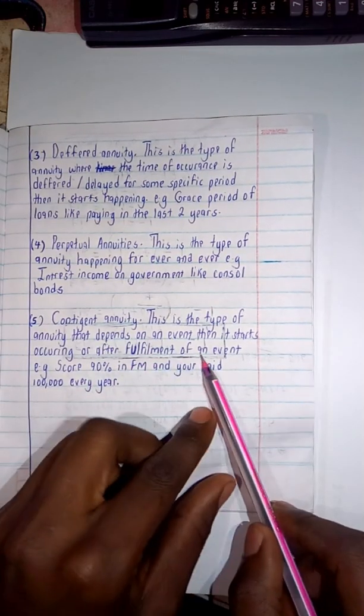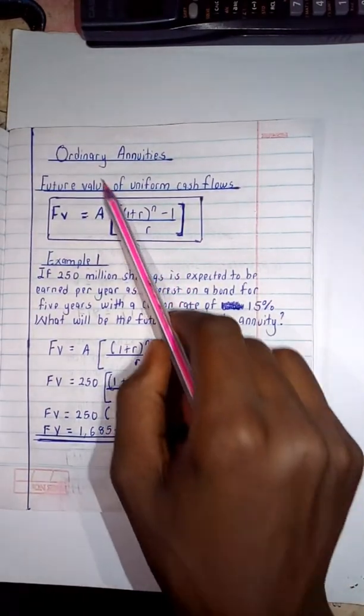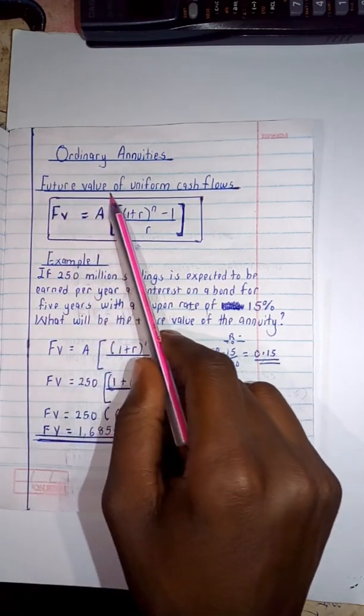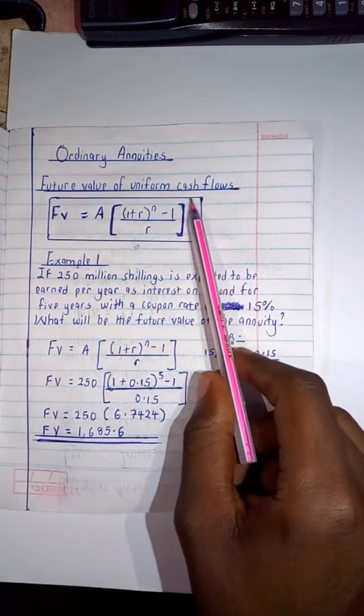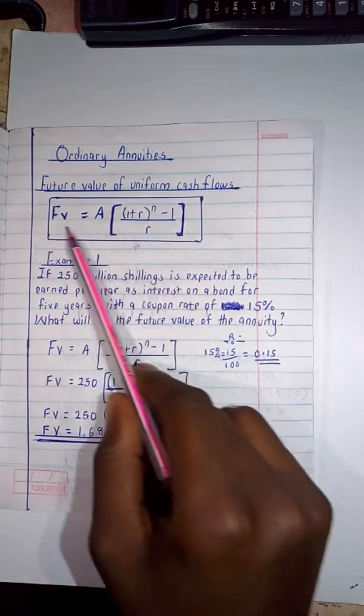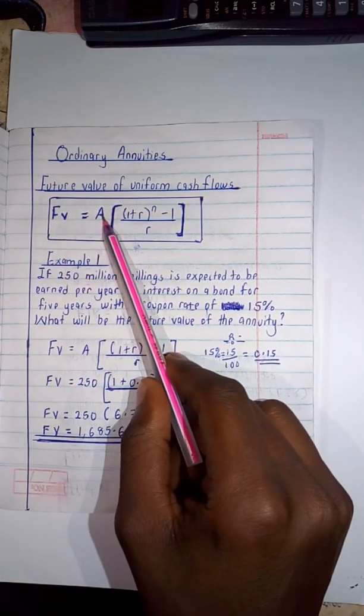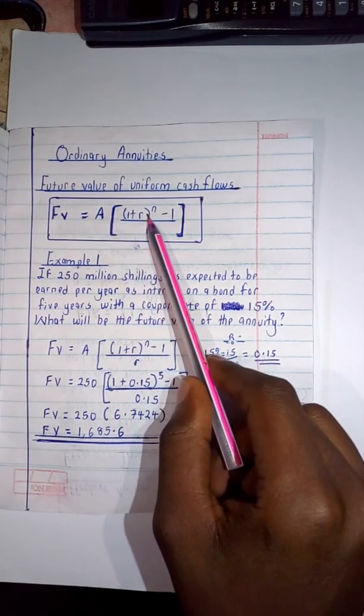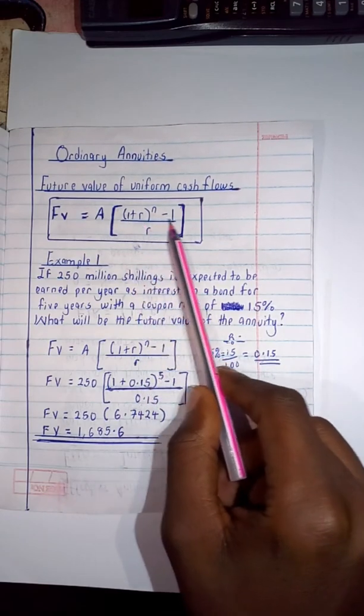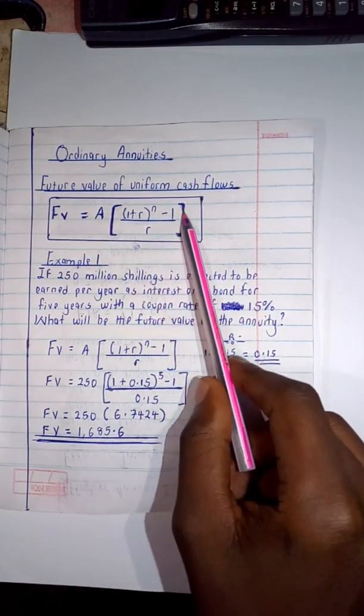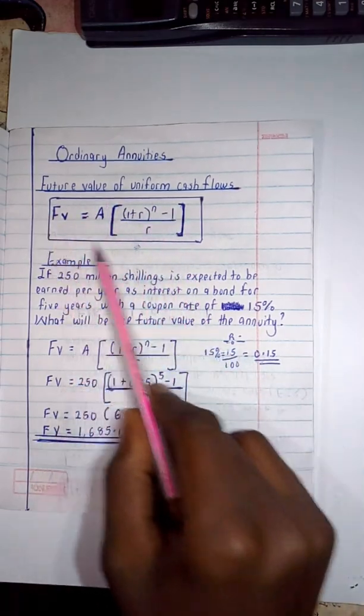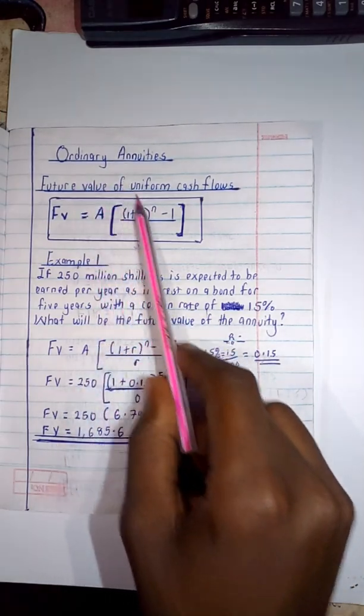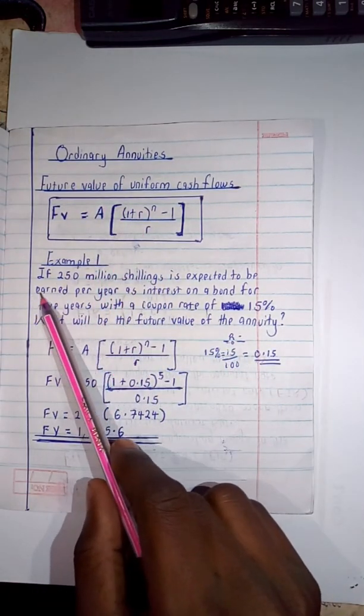So after that, we are going to look at ordinary annuities and under ordinary annuities we are having the future value of the uniform cash flows. Now with that, this is the formula: future value is equal to A (A stands for annuity) square brackets (1+r)^n minus 1 divided by r. So this is the formula we are going to be using for the uniform cash flows of ordinary annuities, then with this we're having an example.